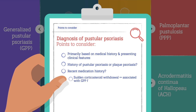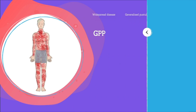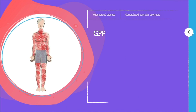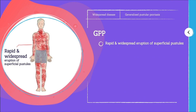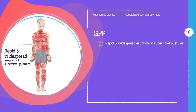For example, sudden withdrawal of corticosteroid treatment is a precipitating factor for GPP flare in some people. Has any new medication been used lately that might have triggered acute generalized exanthematous pustulosis, or AGEP?